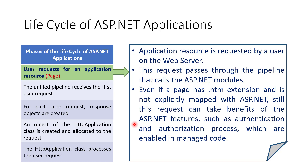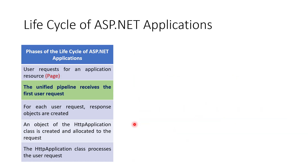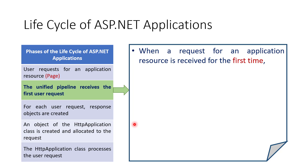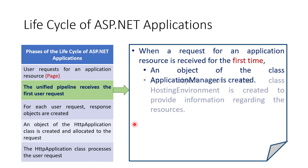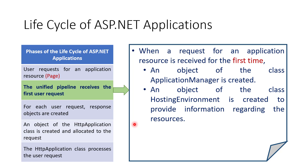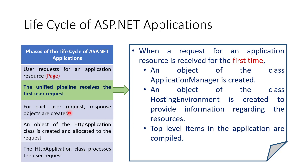In IIS 6.0, this process requires manual configuration due to two separate pipelines, but in IIS 7.0 this is directly available. The second phase is when the unified pipeline receives the first user request. In this phase, when a request for an application resource is received for the first time, an application domain is created using an object of the ApplicationManager class. The application domain isolates applications from each other and enables the processing of user requests. Information about the application can be accessed when the hosting environment object is created within the application domain.